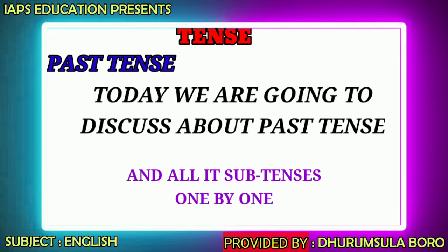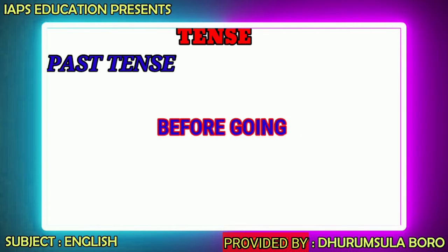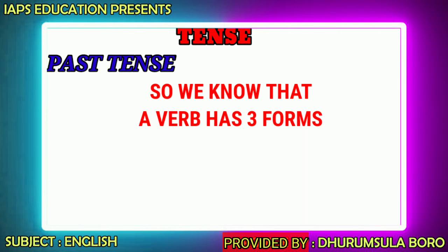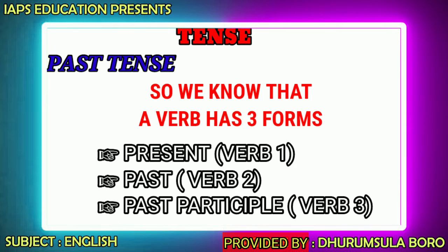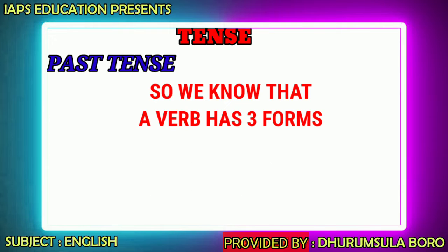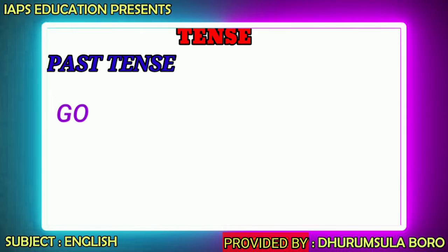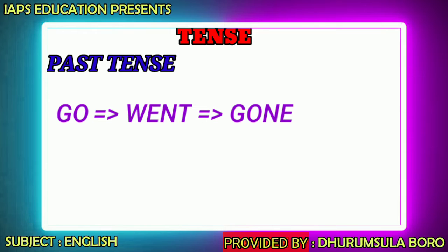Before going to past tense, let me tell you about verbs. A verb has three forms: present (Verb 1), past (Verb 2), and past participle (Verb 3). There is also the present participle form. For example, the verb 'go': present is 'go', past is 'went', past participle is 'gone', and present participle is 'going' — the -ing form of the verb.